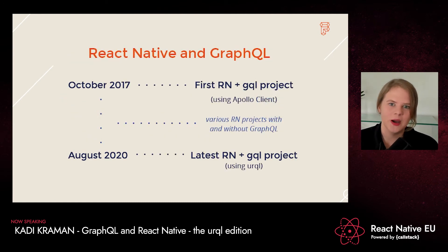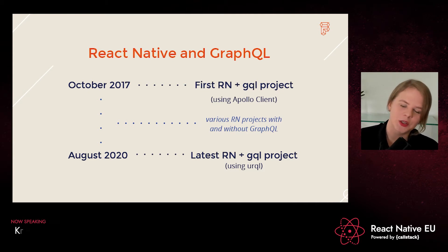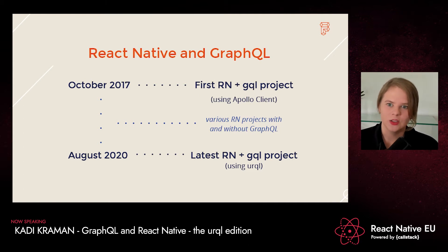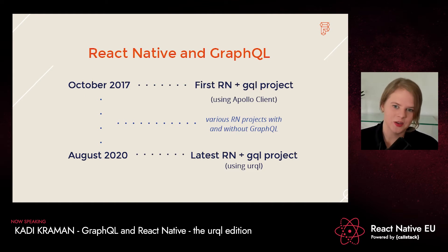A bit of history of my experience using React Native and GraphQL. My very first React Native project, which was in 2017, used GraphQL and that was using Apollo Client. After that, I worked on various React Native projects both with and without GraphQL, both Greenfield and Brownfield — but those had always been using Apollo Client. This all changed early this year when I started a Greenfield project where the client wanted us to use Urql on the front end. I was incredibly excited because I'd heard a lot about Urql and been really keen to try it out in anger.